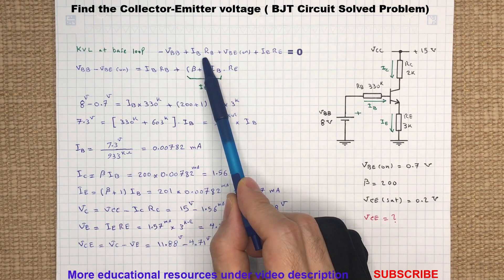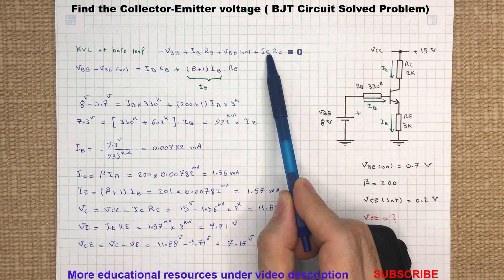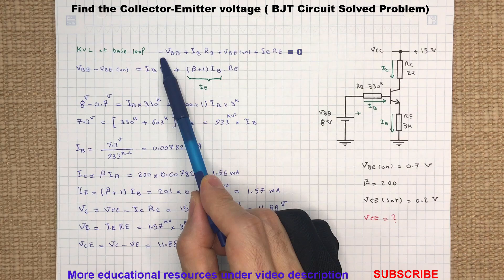Remember the minus sign for the 8 volt source is because the current IB is leaving the positive terminal of this voltage source. Also remember that the current flowing through the emitter is beta plus 1 times the base current.